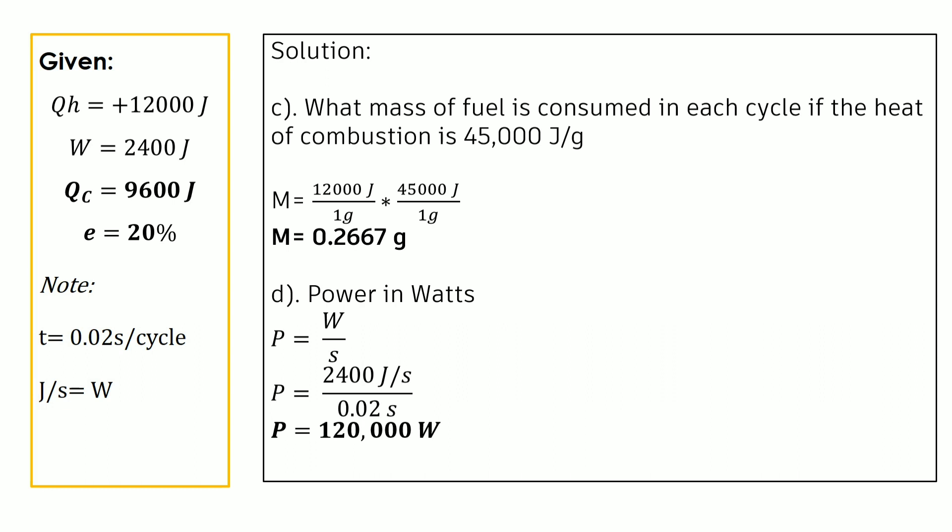Next, if the engine goes through 50 cycles per second, what is the power in watts, kilowatts, and horsepower? We have the conversion: time per cycle is 0.02 seconds per cycle, and joules per second equals watts. Plugging in the values — work of 2,400 joules divided by 0.02 seconds per cycle — we get a power of 120,000 watts.